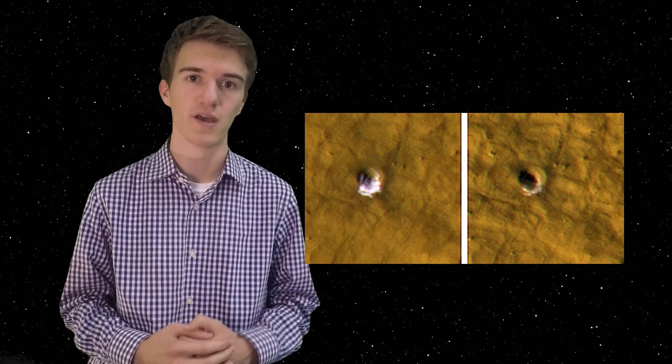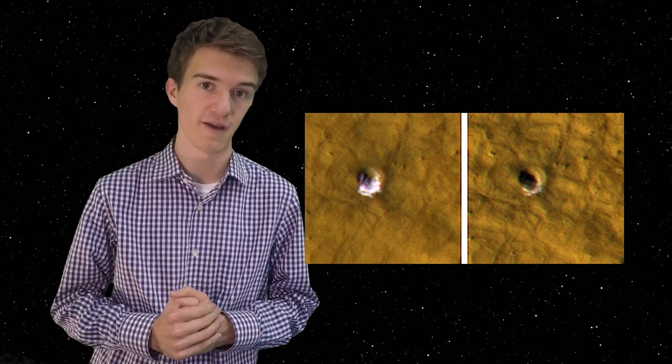There's also a really interesting phenomenon where there was an impact on the surface of Mars. And when they took images of it, there was ice where the impact had occurred, which means that there was ice underneath the surface. And they were able to take images of it slowly melting away over a few-day and a few-week time frame.